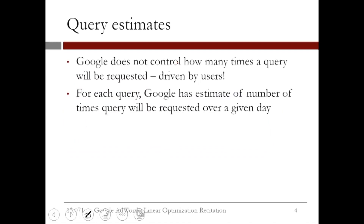The last piece of data that we need before we can define our problem is to know how popular the queries are. Obviously, Google does not control how many times a search query will be searched, because the users are the ones who submit the queries. However, Google does have an estimate of the number of times, on average, the query will be requested over a given day.